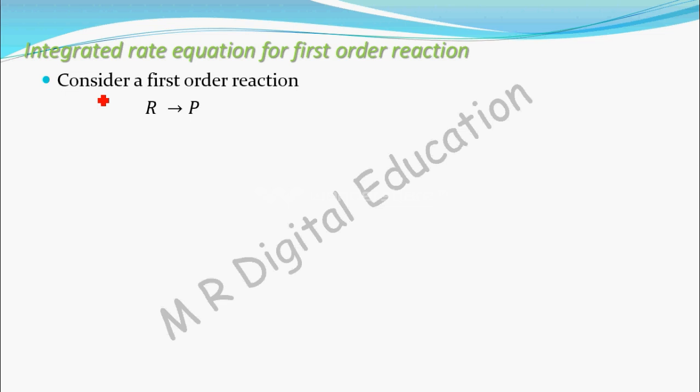Since it is a first-order reaction, you can write the rate law as: rate equals minus dR by dt equal to k into concentration of R to the power one. The negative sign is because rate with respect to reactant will always be with a negative sign.